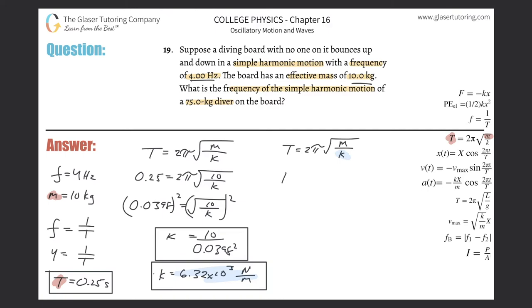So now I can solve for period because I know the mass that's oscillating. The mass that's oscillating is the 75 kilogram diver plus the 10 kilogram board, all divided by the spring constant we just found of 6.32 times 10 to the third. So let's calculate it. So the period here now of oscillation is going to be 2π times the square root of 85 divided by our answer we found before, the spring constant. And so here, the period is now going to be 0.729 seconds.